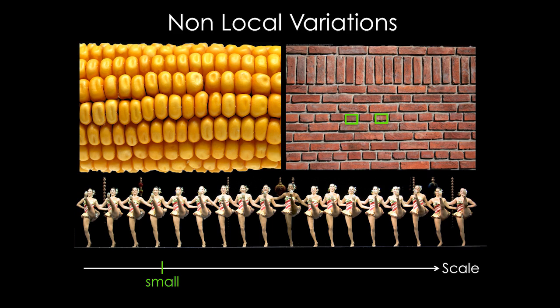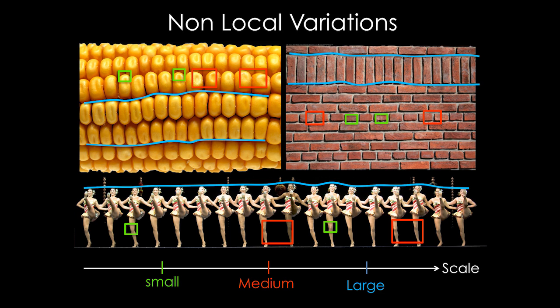Small-scale variations such as the bumps in the brick wall, the curvature of the corn kernels, or the exact pose of the dancer's knees. Medium-scale variations such as the spacing between objects, or large-scale variations such as their alignment in rows.